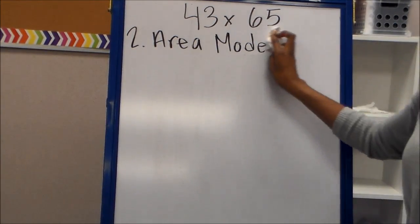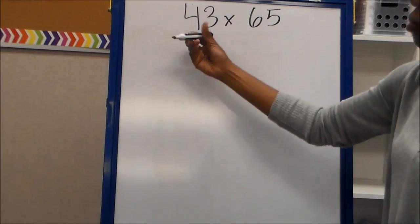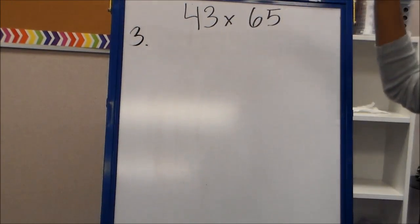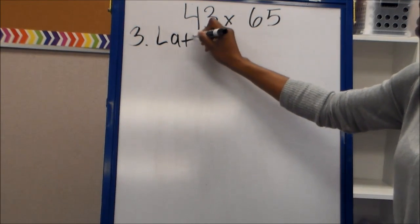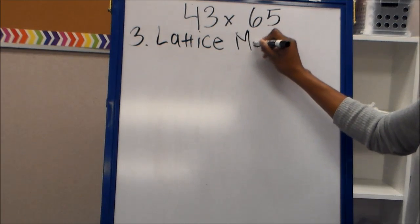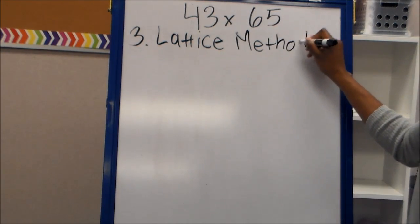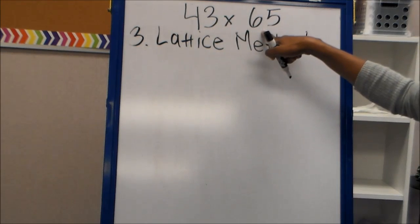The third way that we multiply is the lattice way. Or lattice method. The kids find this to be, they think this is the most fun. But it's also very different. The lattice method. So we have 43 times 65.